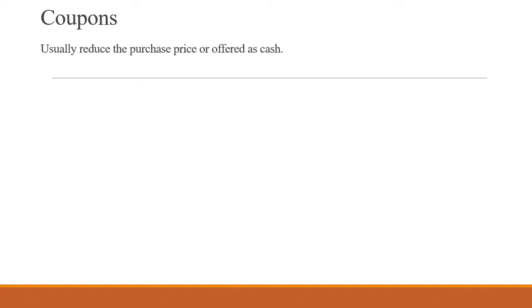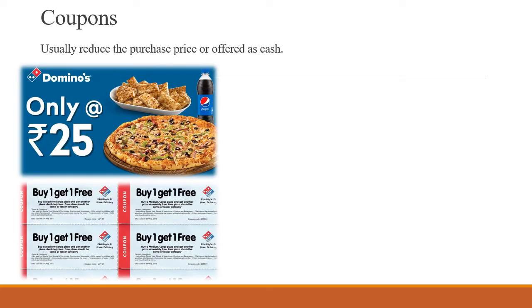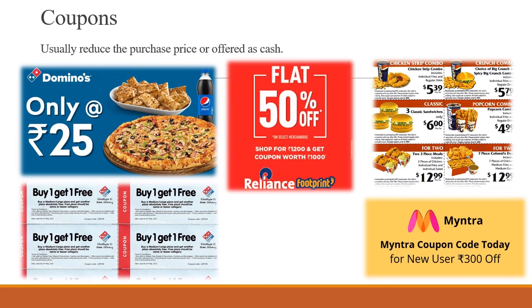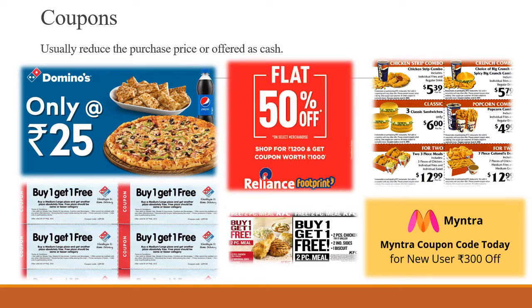Next, coupons. Coupons can be presented to the retailer while buying the product, and the holder of the coupon gets the product at a discount. Best examples are coupons by pizza restaurants like Domino's. These coupons are offered at a minimum cost as a bonus. They are used to attract competitors' customers for different sizes of established products.